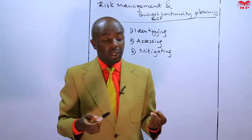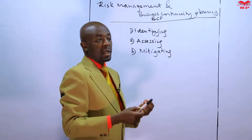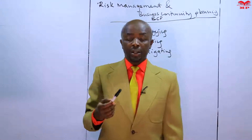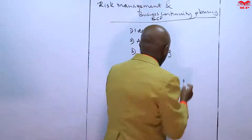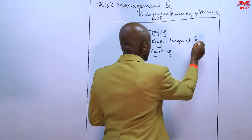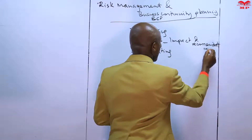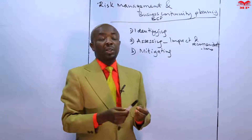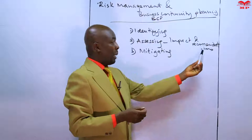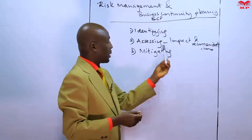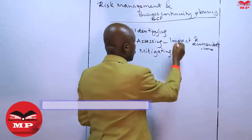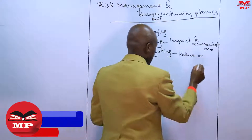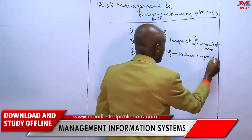Risk assessment looks at the impact of the risk on IT-based activities, and you are trying to suggest how that risk is going to be mitigated. In assessing the risk, we are looking at the impact and recommendations. For example, if a computer virus infects our hard disk, is it going to result in data loss or data inaccessibility? We are looking at the impact of that risk and then we recommend how we can reduce it. Risk mitigation talks about using the recommendations that have been defined to reduce the impact of the risk.